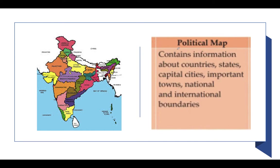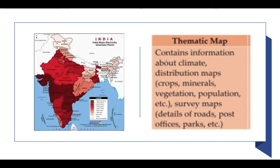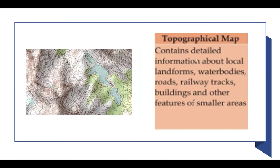The second type is a political map. If any map represents countries, states, capital cities, names, or important towns, then it is a political map. The third type is a thematic map. A thematic map is based on a theme — for example, it shows the distribution of crops, minerals, schools, populations, diseases, or even the distribution of COVID-19 across various states.